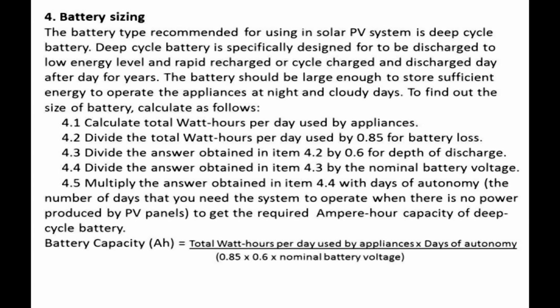The battery should be large enough to store sufficient energy to operate the appliances at night and on cloudy days. To find the battery size, calculate as follows: Step 4.1: Calculate total watt-hours per day used by appliances. Step 4.2: Divide the total watt-hours per day by 0.85 for battery loss. Step 4.3: Divide the result by 0.6 for depth of discharge. Step 4.4: Divide the result by the nominal battery voltage. Step 4.5: Multiply by the days of autonomy — the number of days the system must operate without PV power — to get the required ampere-hour (Ah) capacity of the deep cycle battery.